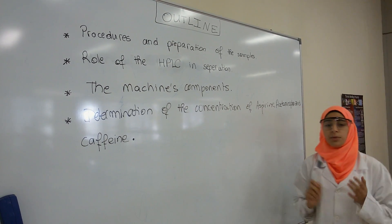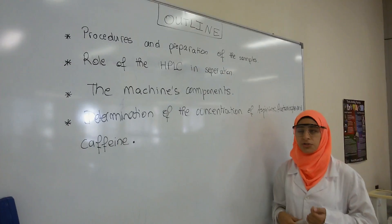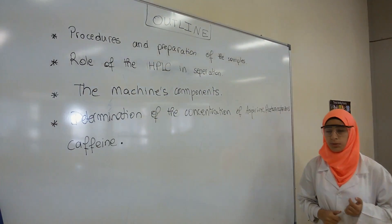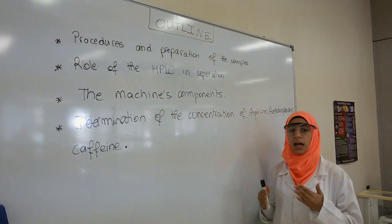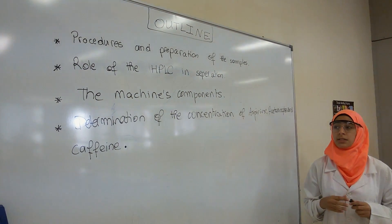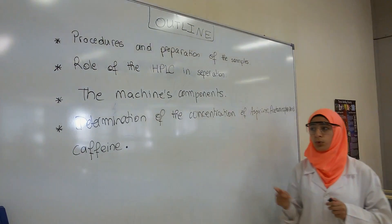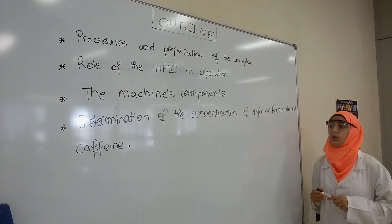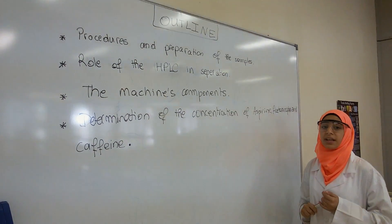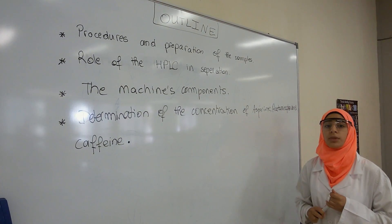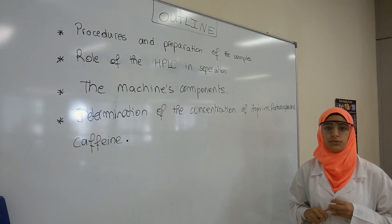So this is the outline. At the beginning we will talk about the procedures and how we prepared our samples, then we will talk about the role of the HPLC in the separation technique, after that we will talk briefly about the machine's components, and finally we will talk about the determination of the concentration of aspirin, acetaminophen and caffeine after we obtained the data from the HPLC curves.